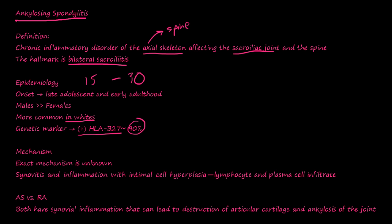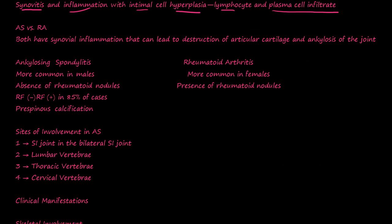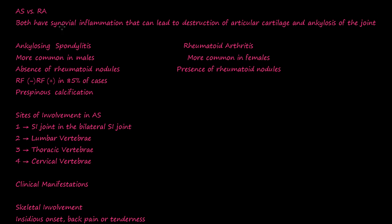The exact mechanism is unknown, but we know there's some kind of inflammation of the synovial membrane and synovial parts of the joints. There's inflammation with intimal cell hyperplasia — these cells undergo hyperplasia to respond to some kind of stress due to the inflammation. Lymphocytes and plasma cells come into the area. AS is similar to rheumatoid arthritis in that they both have synovial inflammation that can lead to destruction of articular cartilage and ultimately lead to ankylosis.